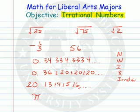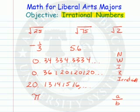If rational means it can be written as one integer over another integer, then irrational means it cannot be written as one integer over another integer.